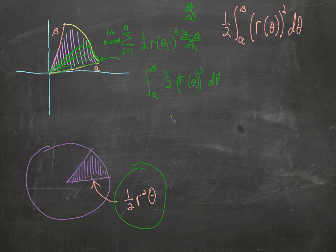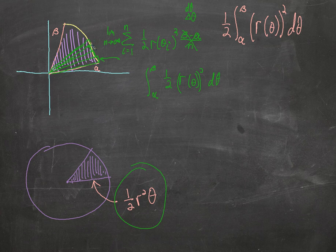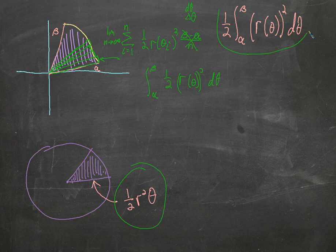gives us the area of a sector. When we add up these infinite sectors and all their areas, we get this guy right here, and then when we take the 1 half out, we get that right there.